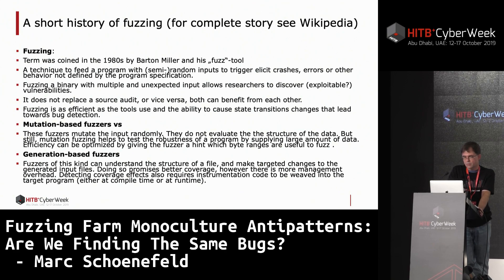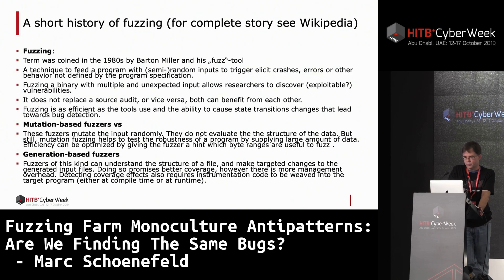What different fuzzing technologies are out there? There is mutation-based fuzzing — these fuzzers mutate the input randomly. They do not evaluate the structure of the data or the program and don't know where the control flow goes, so they just feed random data to the program. A mutation-based fuzzer can benefit a lot from the user — for example, giving hints about which byte ranges are useful to fuzz, because fuzzing metadata is more efficient than fuzzing free text.